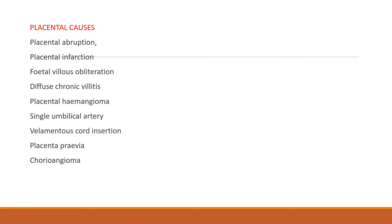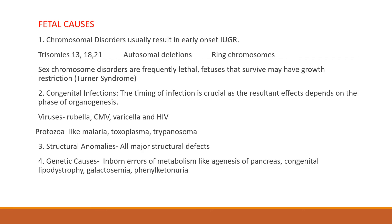Placental causes include placental abruption, infarction, fetal villus obliteration, diffuse chronic villitis, placental hemangioma, single umbilical artery, velamentous cord insertion, placenta previa, and chorioangoma. Fetal causes include chromosomal disorders like trisomies, autosomal deletions, ring chromosomes, and sex chromosome disorders; congenital infections including rubella, CMV, varicella, HIV, malaria, toxoplasma, and trypanosoma; structural anomalies; and genetic disorders including inborn errors of metabolism like agenesis of pancreas, congenital lipodystrophy, and galactosemia.